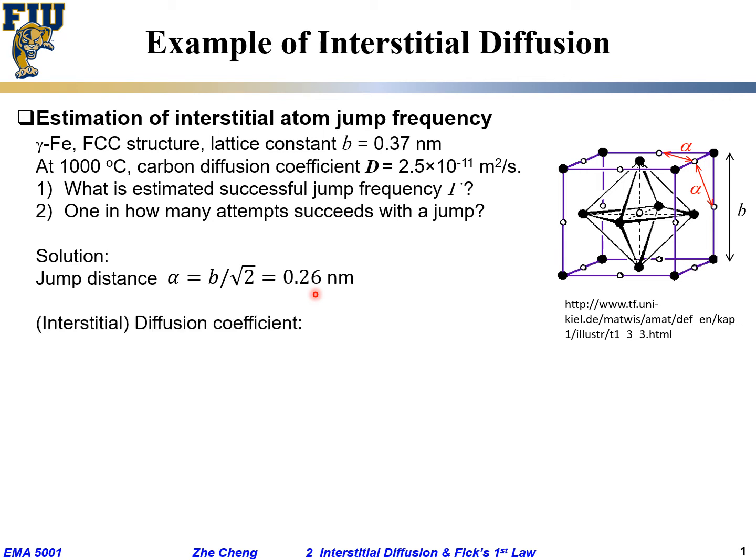So once we know α, remind ourselves, we already know the equation for so-called interstitial diffusion coefficient. The D, that's what we gave you before, is 1/6. We said we use this for a simple cubic, but we can still use this for FCC, BCC. 1/6, that's the probability.